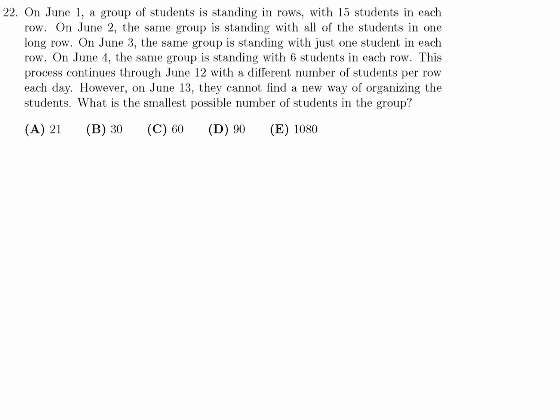All right. So, we have the number of rows, we have students per row, and then we have the total number of students. And we'll just do it for a few. June 1st, June 2nd, June 3rd, June 4th. And then eventually, you'll get to June 13th and you won't be able to do it anymore. All right. Well, let's look at the first few.